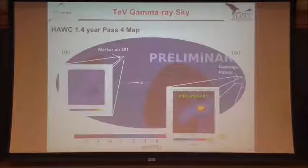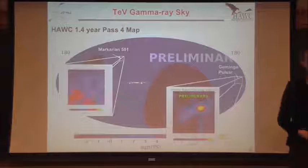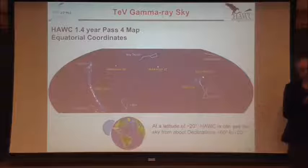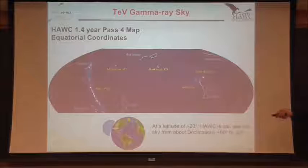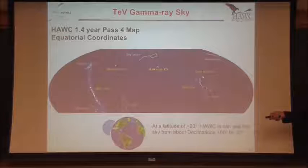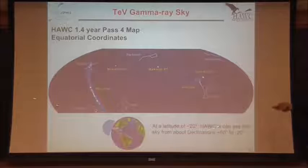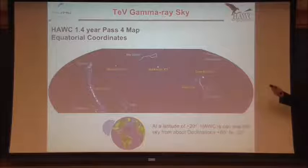You might ask what's with the holes in the HAWC map. Fermi didn't have holes. HAWC is not in space — we are stuck on Earth. When we plot the HAWC map in equatorial coordinates, instead of being centered on the galaxy it's centered on Earth. HAWC is at about 20 degrees latitude, so the field of view is roughly from 60 to negative 20 degrees in latitude. That's where those holes come from.